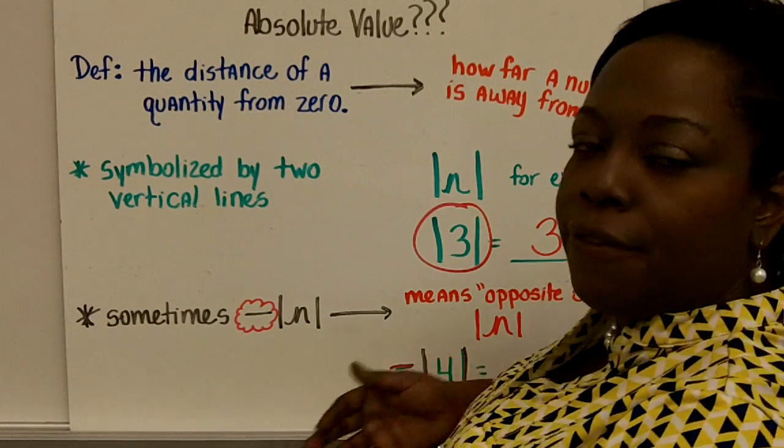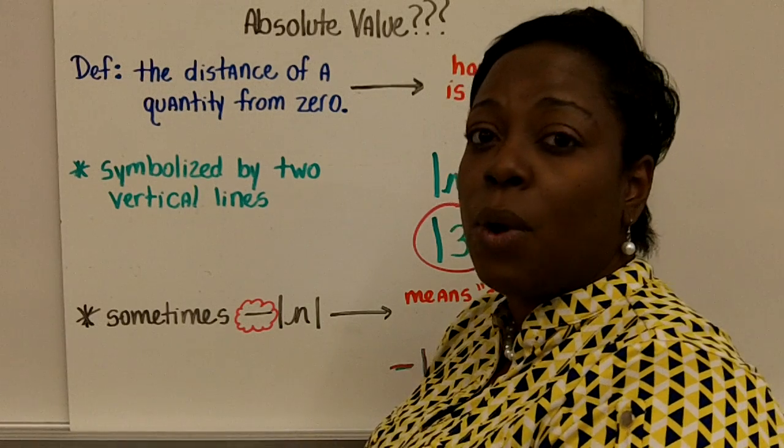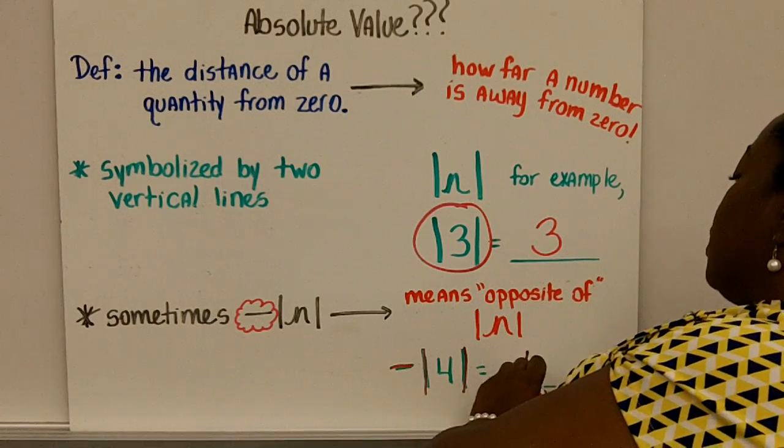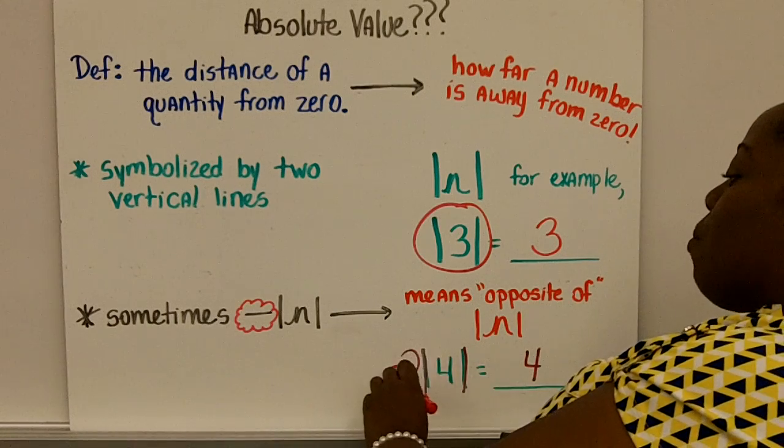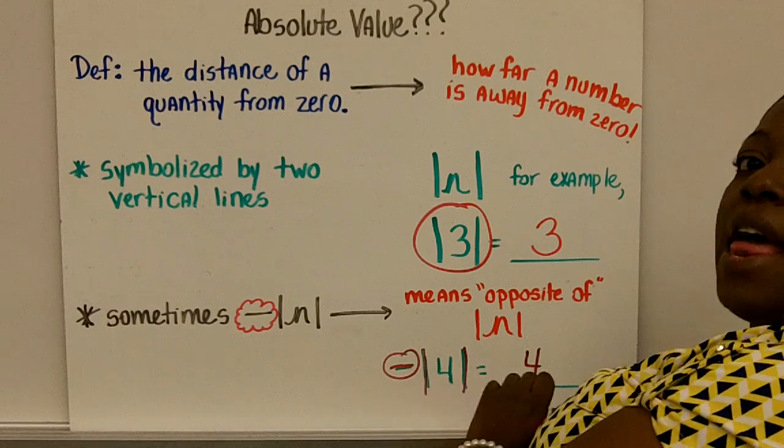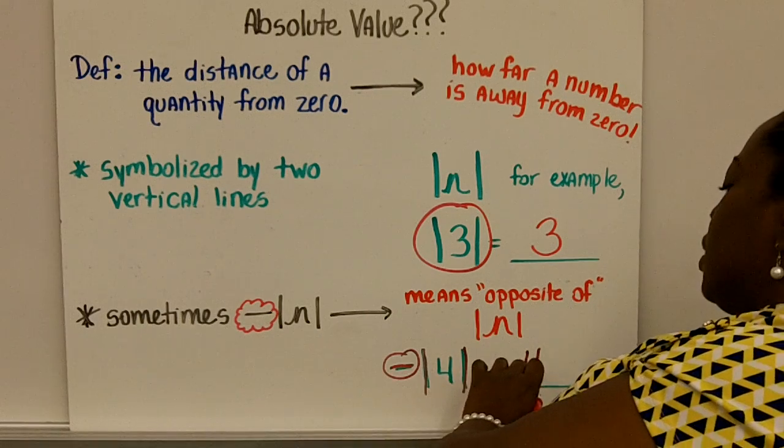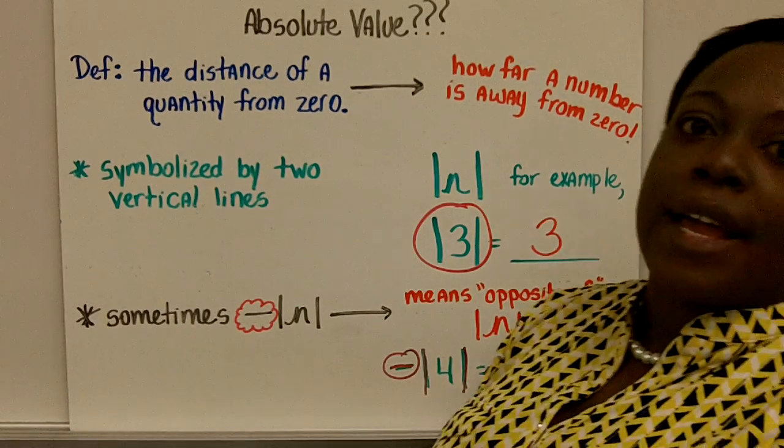Well, we just learned that four is four places away from zero on the number line. But the opposite is what they're asking for. What is the opposite of that absolute value? So the opposite would be negative four.